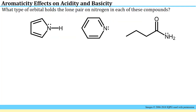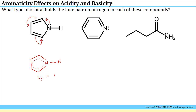One thing that influences the basicity of a compound is whether or not the lone pair on the nitrogen atom is involved in resonance or tied up in a pi system for aromaticity. This question asks what type of orbital holds the lone pair on the nitrogen in each compound. For the first compound, the lone pair is involved in resonance around the ring and is needed for aromaticity. The resonance hybrid shows pi bonding character between each carbon and the nitrogen, so the lone pair must be in a pi-type or p-type orbital.